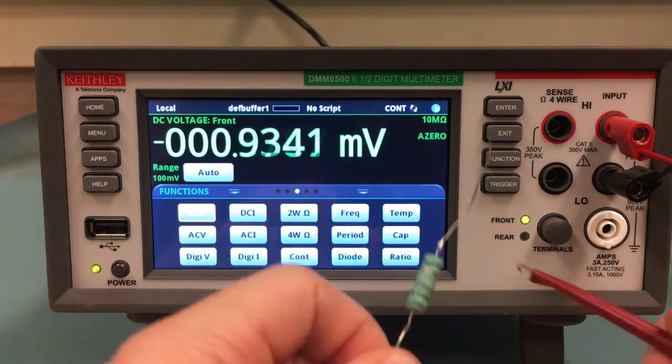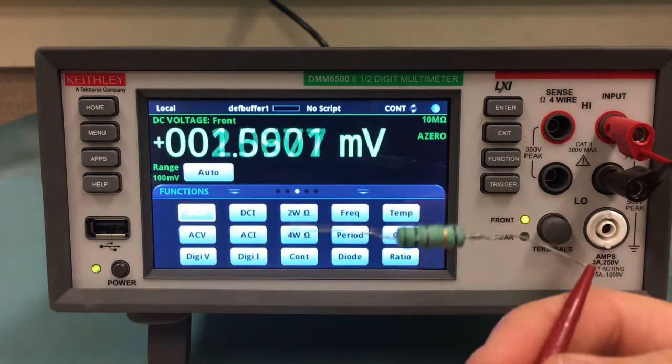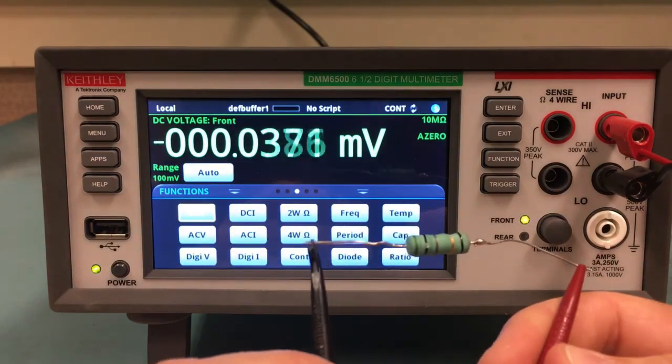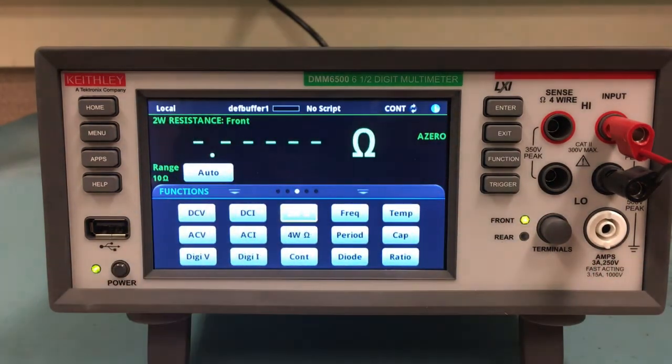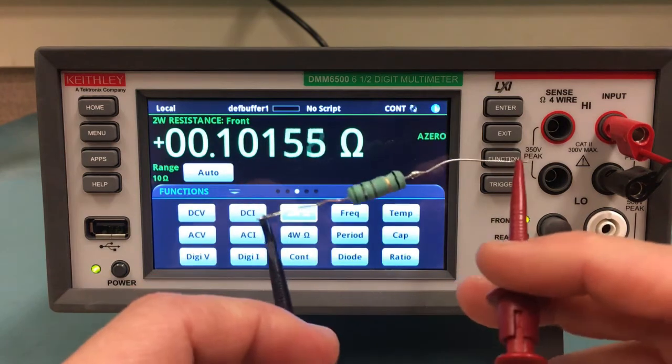So let's go ahead and connect the device under test, and we will select two-wire resistance. As you can see, I'm just about double what I am expecting from this particular device. I can change the position of where the leads are connected, but that doesn't make much of a difference. Let's investigate how to correct this.